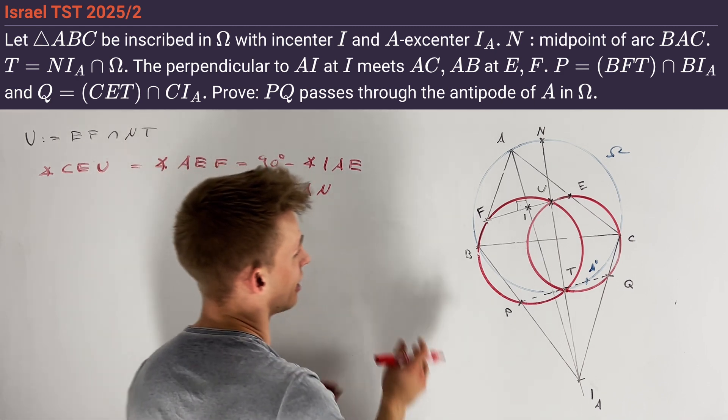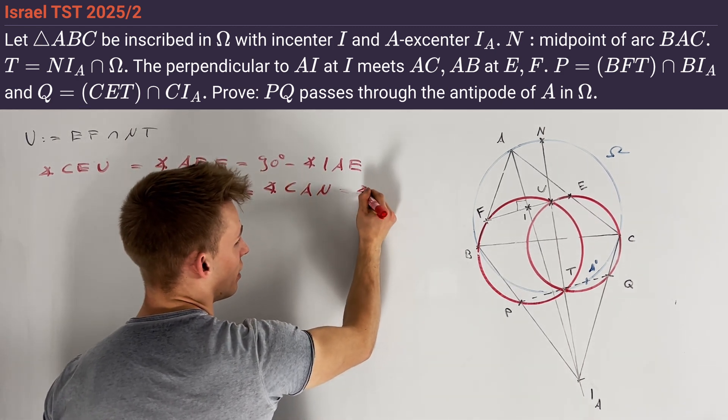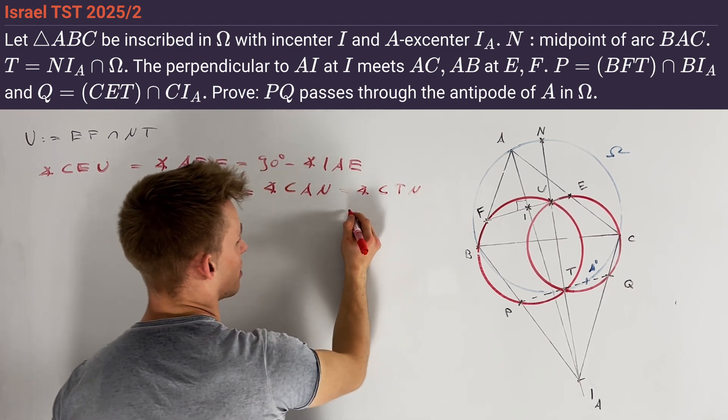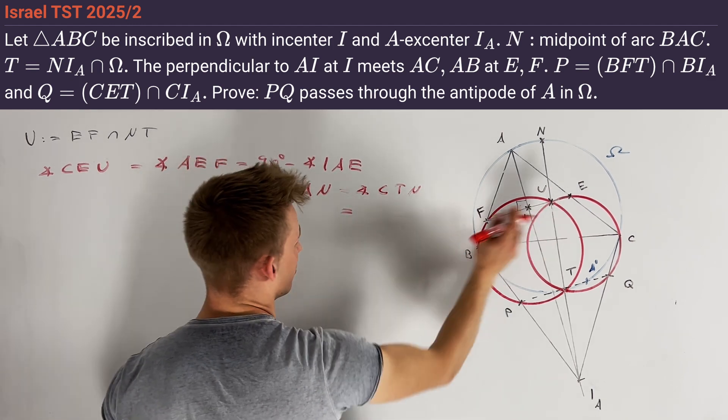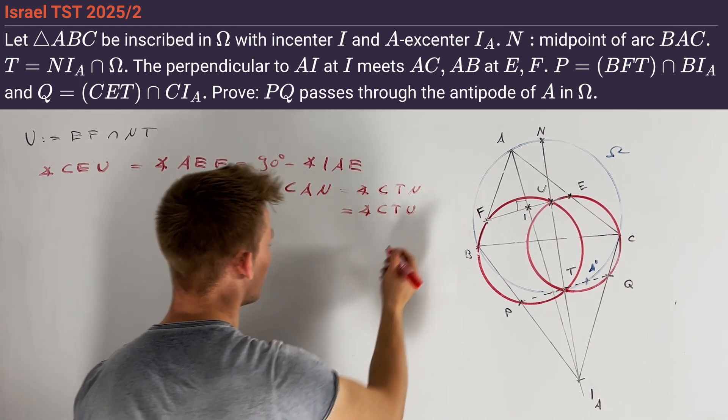Using that all the points lie on Ω, we can see that this is also equal to the angle CTN, which is now by definition of the point U equal to the angle CTU.